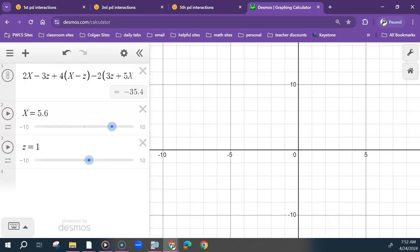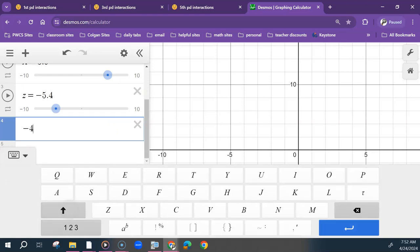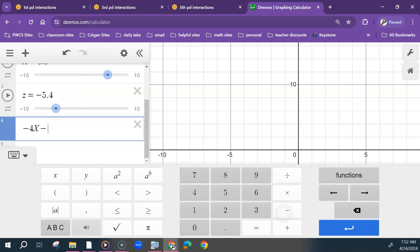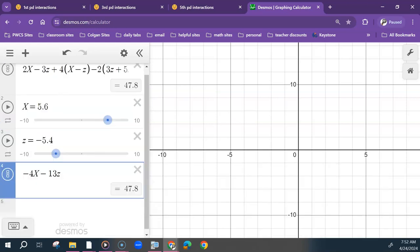Add in all the sliders, change them to two different numbers, it doesn't matter what they are, and then put in your answer, and the decimals should be the same.